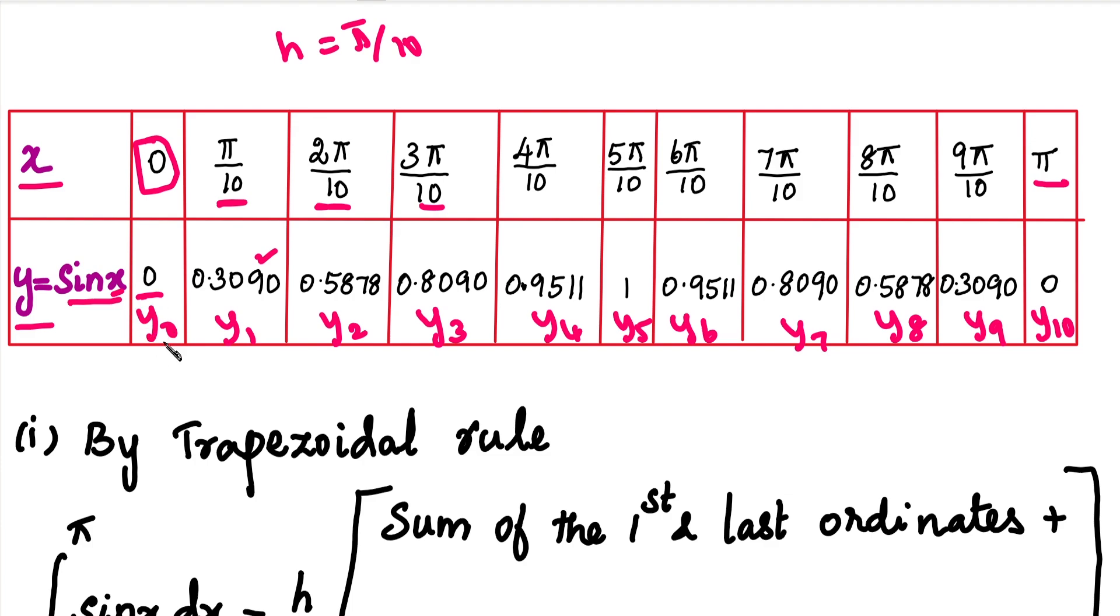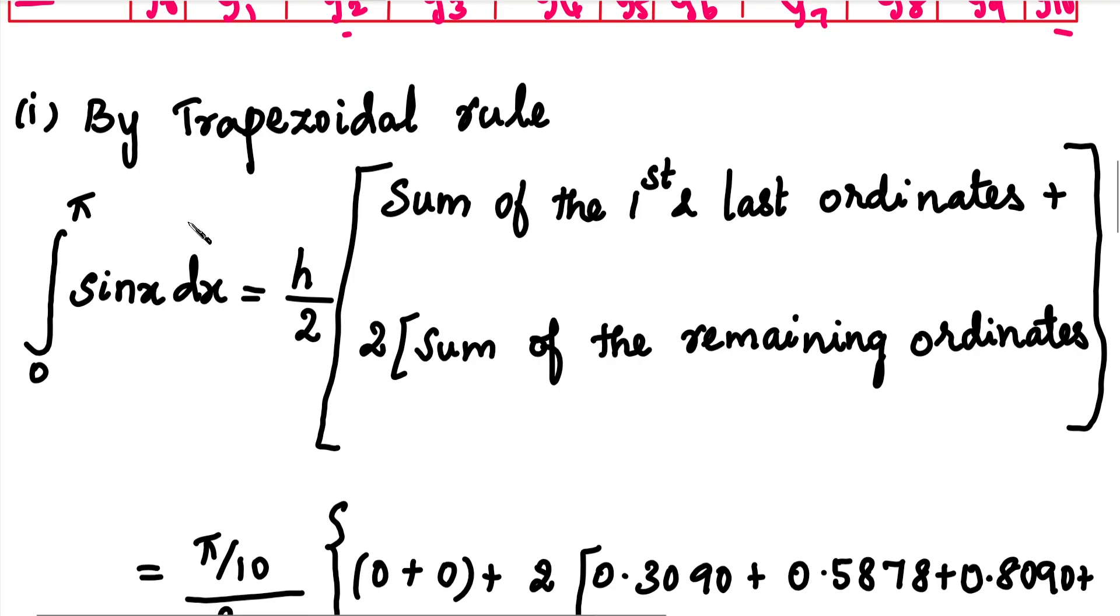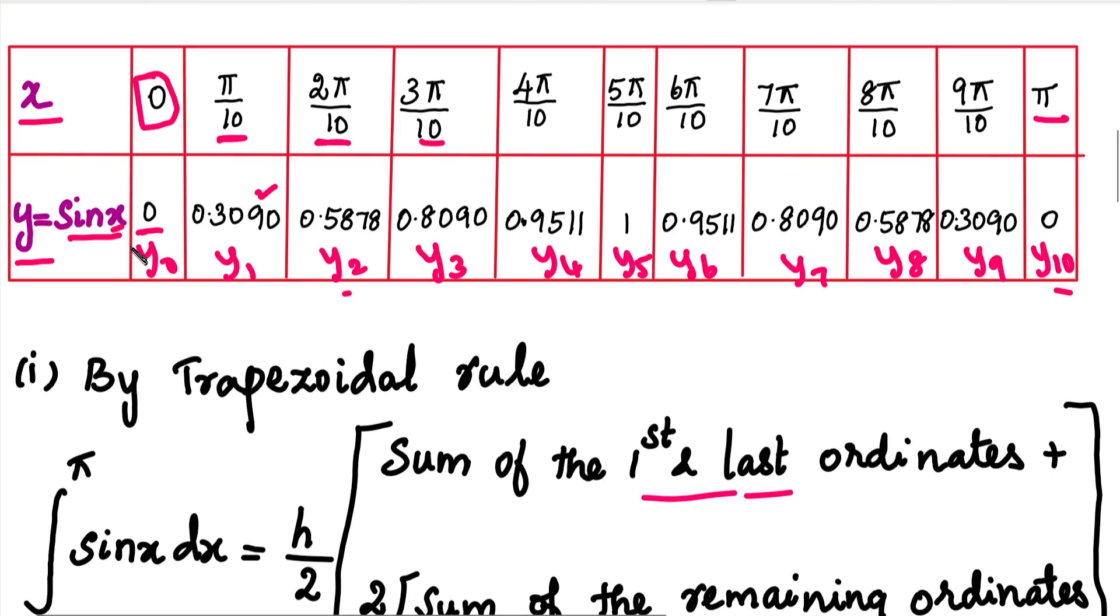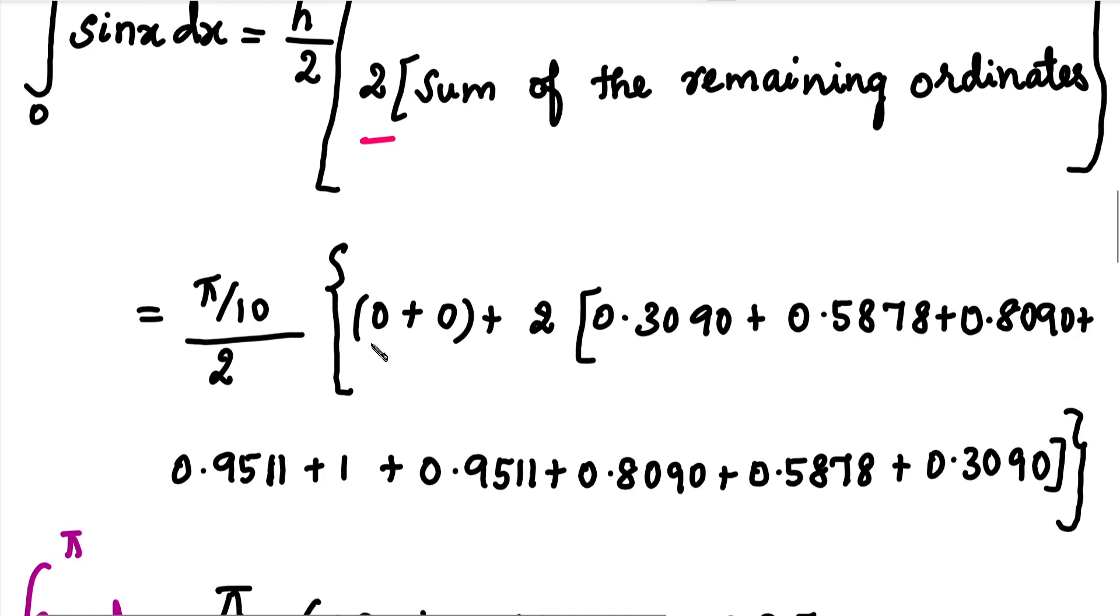Now the values are in the table: the first value is y0 and the last value is y10. These are the ordinates. Next, the trapezoidal rule formula is: integral equals h/2 times [sum of first and last ordinates plus 2 times sum of remaining ordinates]. The first ordinate is y0 and last ordinate is y10.